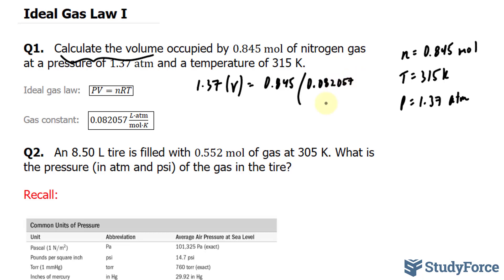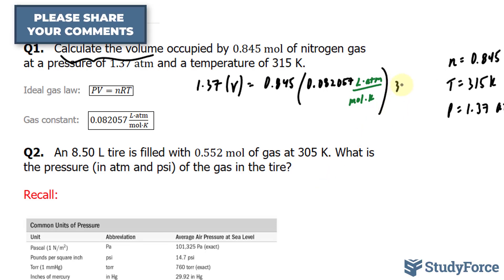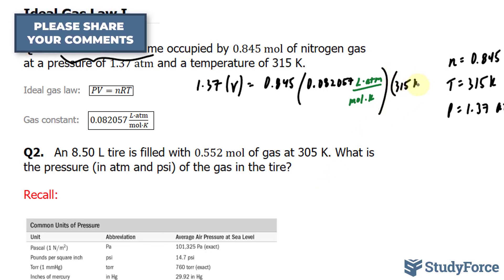0.082057 and I'll write the units down just to show you how all the units cancel out. So we have L times atm over moles times Kelvin. And this is being multiplied to the temperature of 315 Kelvin.